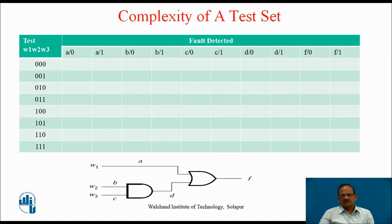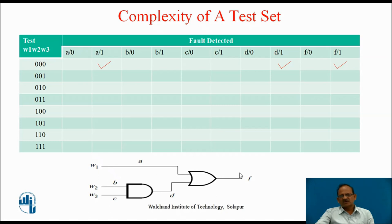When w1, w2, w3 are 0, 0, 0, the correct output is 0. But a faulty circuit will give output 1. This fault may be due to wire a stuck at 1, d stuck at 1, or f stuck at 1. So when we apply 0, 0, 0 and the output generated is 1, the circuit may have either a stuck at 1, d stuck at 1, or f stuck at 1. These three faults are detected by test vector 0, 0, 0.